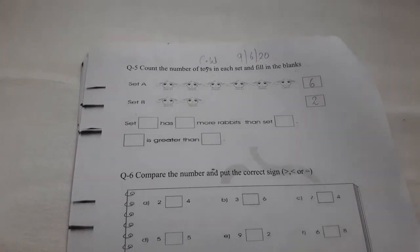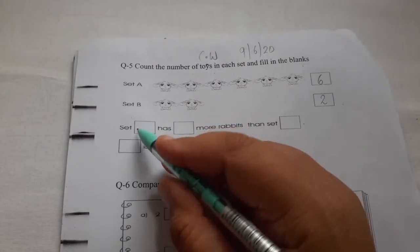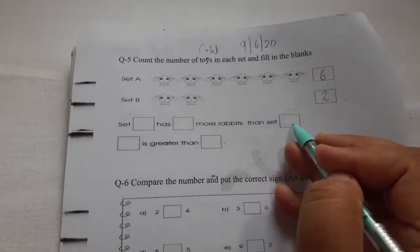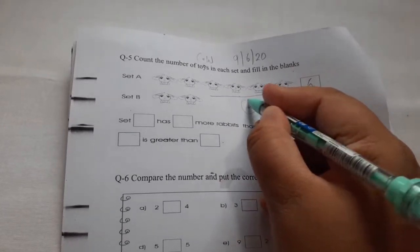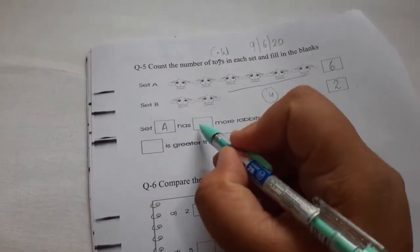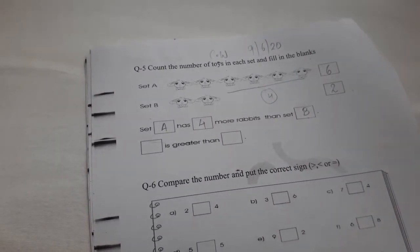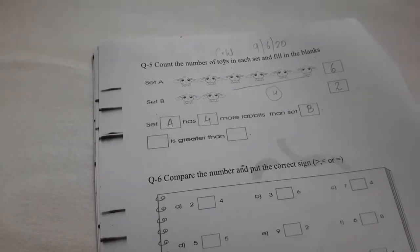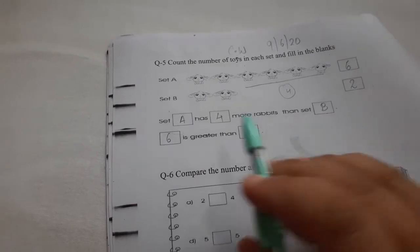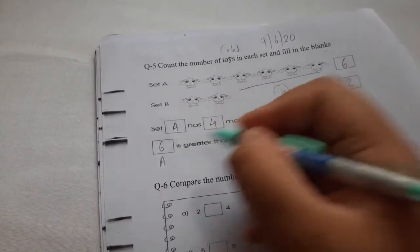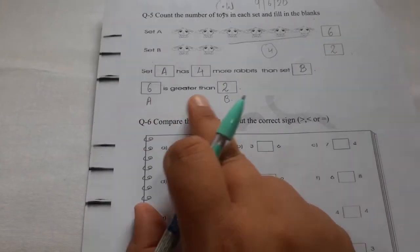So, which set has more rabbits? A or B? Yes. Set A because 6 is greater than 2. So, we can say that set A has more rabbits than set B. Set A has 4 more rabbits than set B. So, you can say that 6 is greater than 2. Or you can also say that set A is greater than set B. Both ways you can write the answer. You can write 6 is greater than 2 or you can write A is greater than B.